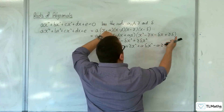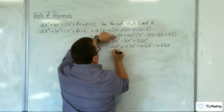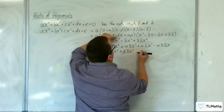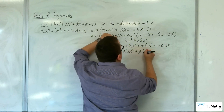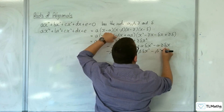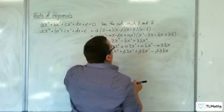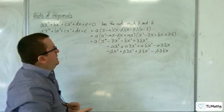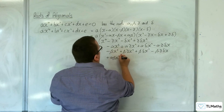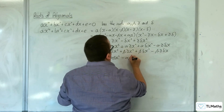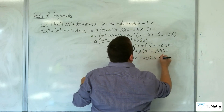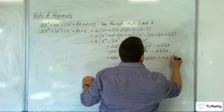Then −βx times each term gives: −βx³, +βγx², +βδx², −βγδx. Then αβ times each term gives: +αβx², −αβγx, −αβδx, +αβγδ.